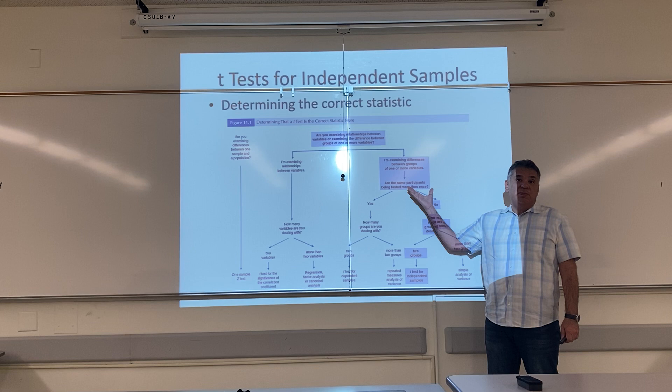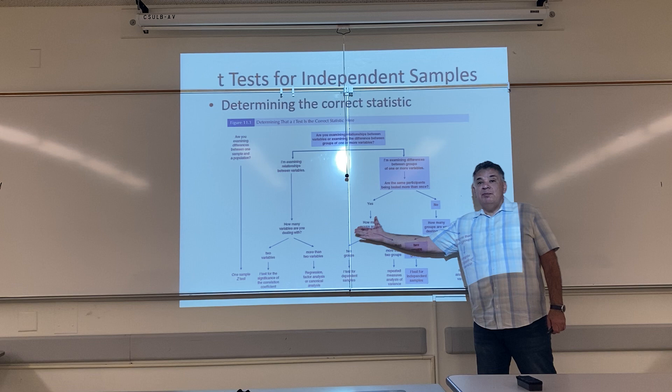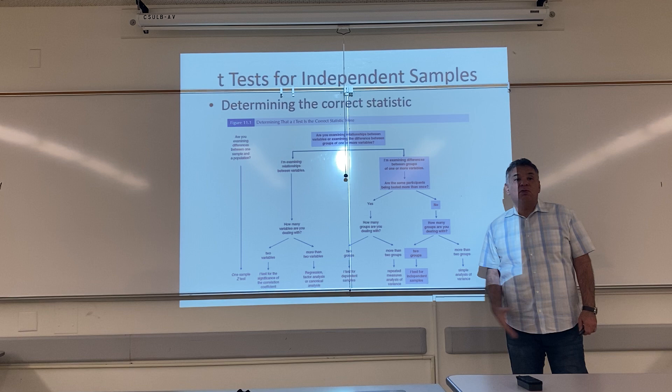So the next question on our flow chart is: are these participants — these people or things in our study — being measured, observed, or tested once or more than once? If they're being tested more than once, we go that way. But the people in our study are only going to be measured, observed, recorded, or tested once. So we're going to go to the right on our flow chart.